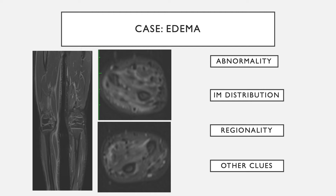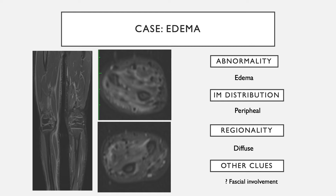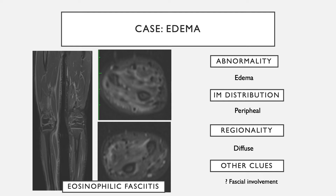In another case, there is increased signal within the muscle on fluid-sensitive fat suppressed images — the abnormality is edema. Looking more carefully at the intramuscular distribution, the increased signal is primarily along the peripheral margins of the muscle — a peripheral distribution of edema. It involves almost all muscles. Given that this is perifascial, one should ask whether the edema is within the muscle or actually in the fascia. Putting this together, this is more like a myofascial syndrome such as eosinophilic fasciitis.